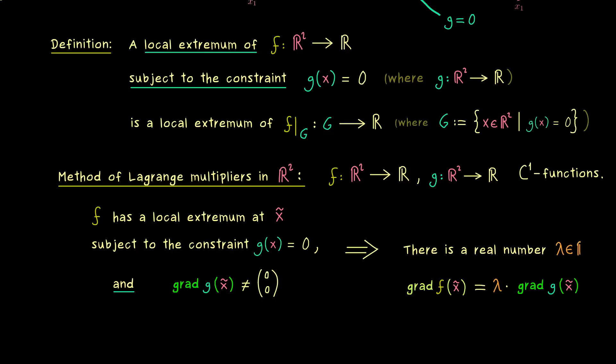And there I can tell you that exactly this number λ is called a Lagrange multiplier. So you can remember, in order to find local extrema under a constraint, we have to satisfy this equation here. So the question is, can we find points x̃ and numbers λ such that the equation is satisfied? And if we can, then the points x̃ we find are the only points where we could have a local extremum.